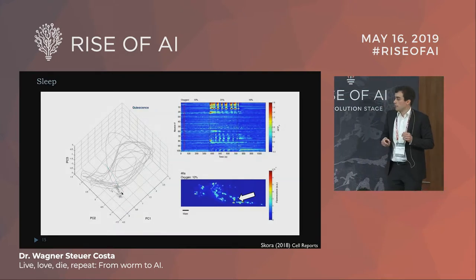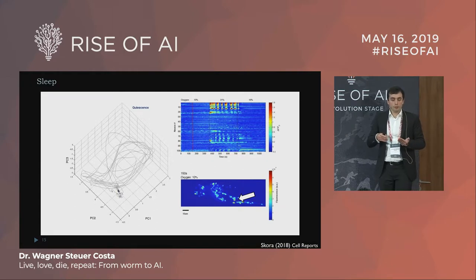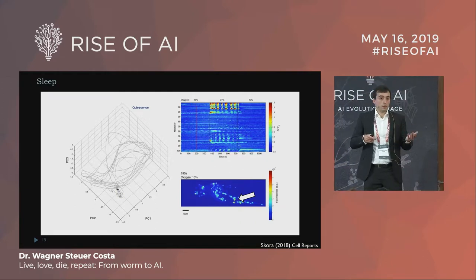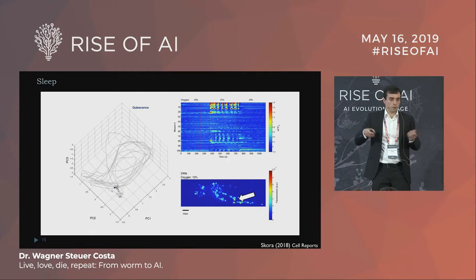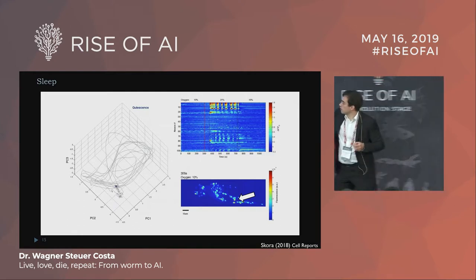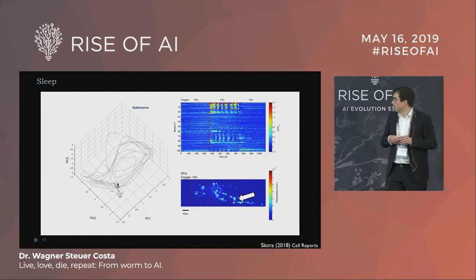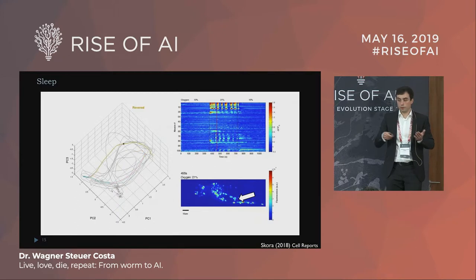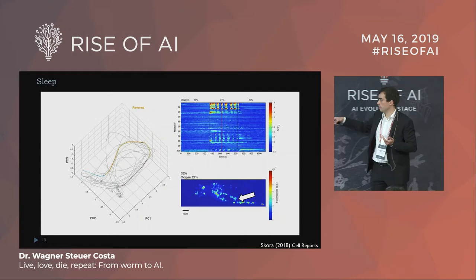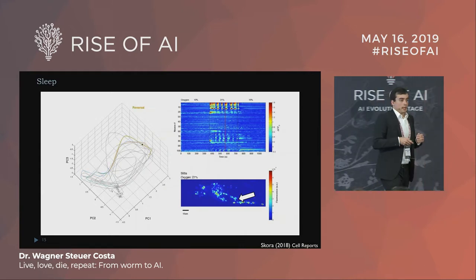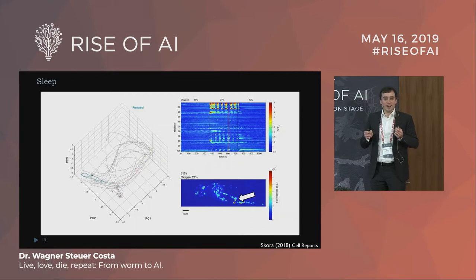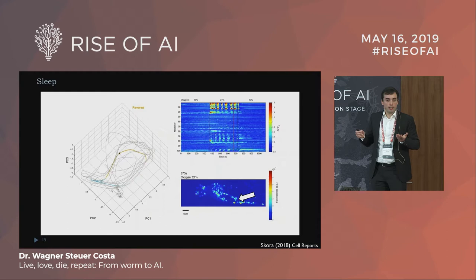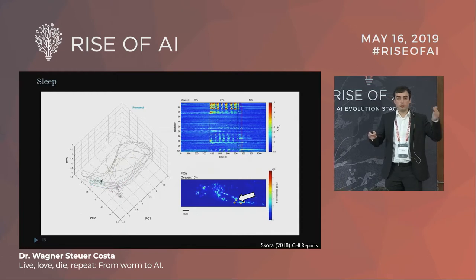The neuron is active for a long time and the animal is essentially sleeping. When we wake it up using a pulse of oxygen — the animal perceives a change in environment — it responds quickly, other neurons light up, and the animal tries to move away. It is restrained so we can film it. After the oxygen levels come back down, the RIS neuron goes active again for a long period, and the animal sleeps again.